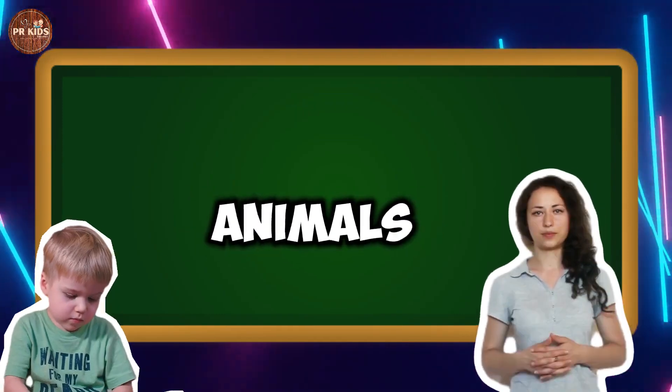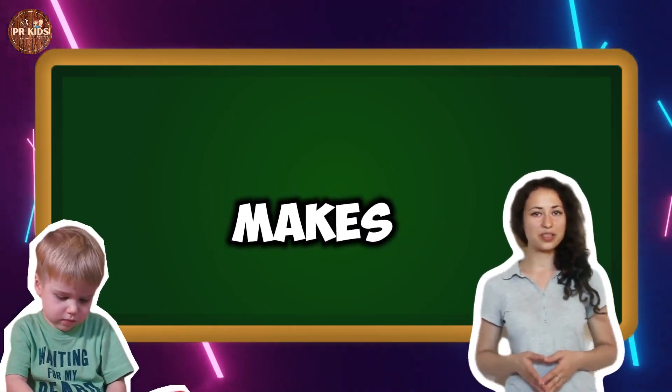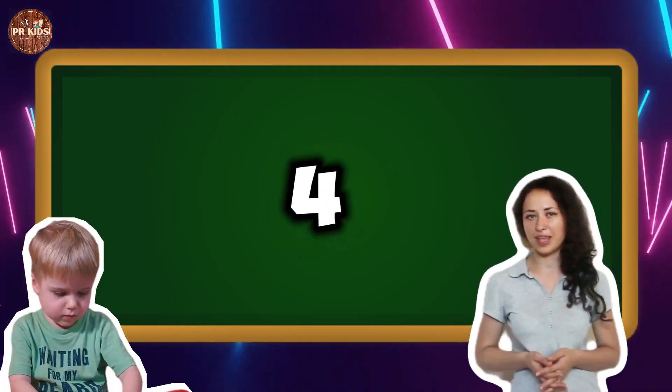Two animals plus two animals makes four animals. One, two, three, four animals.